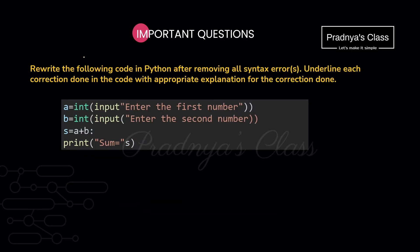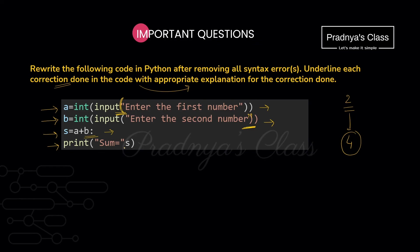Here is another format of question where you need to identify the syntax error — generally this will be for 2 marks, so you will find 4 syntax errors. In the first statement, the opening bracket of the input function is missing. In the second statement, the closing double quotes for the prompt is missing. In the third statement, a colon is used which is invalid — we should not use a colon there. In the last statement, a comma used to separate the message and variable name is missing.